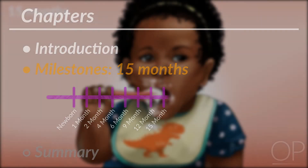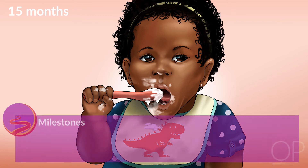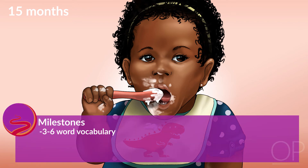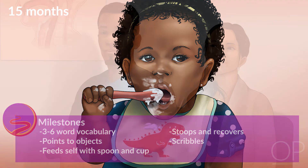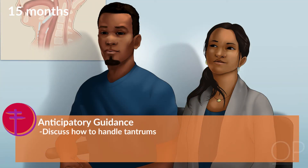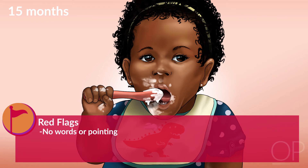Fifteen months: She refines her early language, motor, and cognitive skills by expanding to a three- to six-word vocabulary, pointing not only to show what she needs but also just to share her interest and showing things to her parents. She is more able to feed herself with a spoon and can use a cup. She is refining her walking skills, stoops and recovers, and also likes to scribble. It's a good time to discuss how to handle tantrums, which are a normal way a child can express her sense of independence. No words and no pointing are red flags at this age.